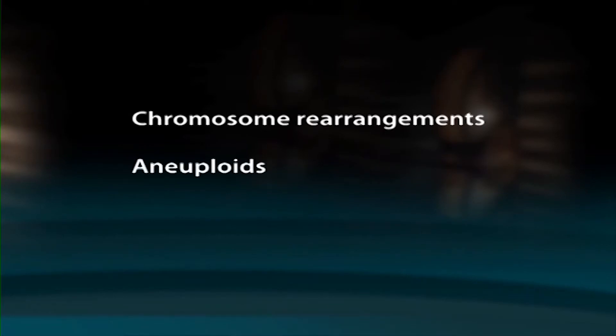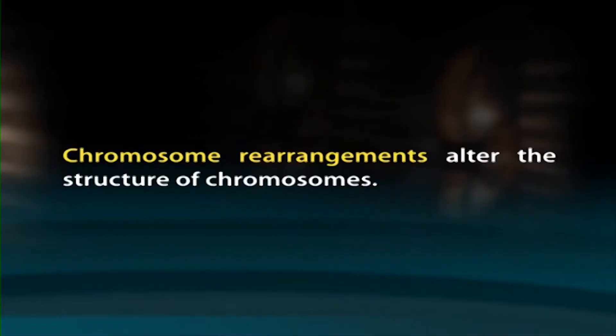Chromosome mutations can be grouped into three basic categories: chromosome rearrangements, aneuploidy, and polyploidy. Chromosome rearrangements alter the structure of chromosomes. For example, a piece of chromosome might be duplicated, deleted, or inverted.